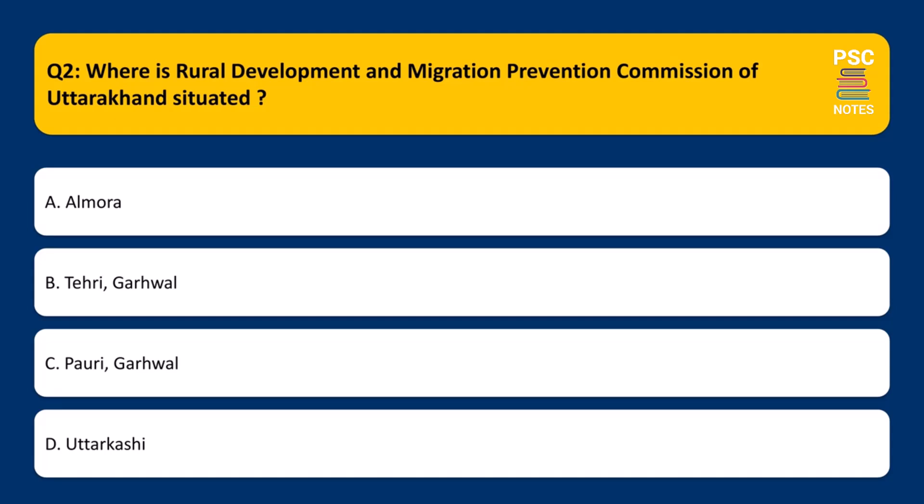Where is the Rural Development and Migration Prevention Commission of Uttarakhand situated? a. Almora. b. Tairi, Garaywal. c. Pori, Garaywal. d. Utarkashi.